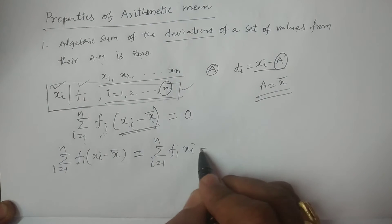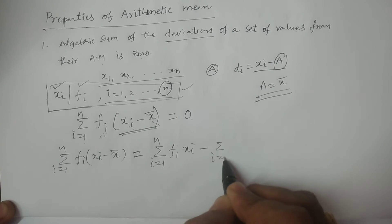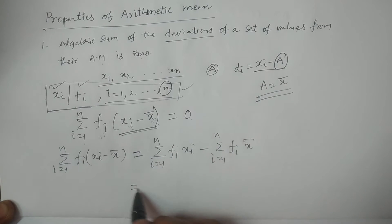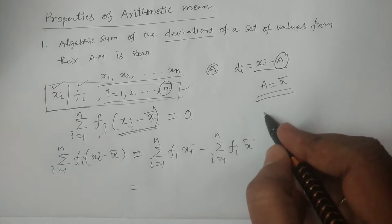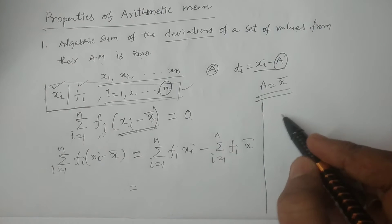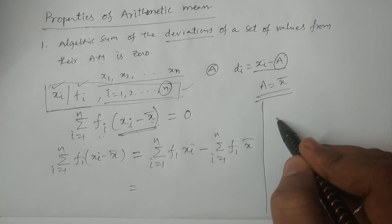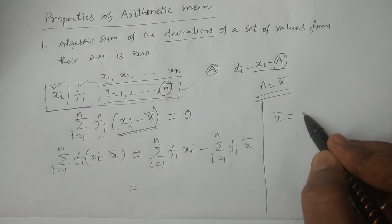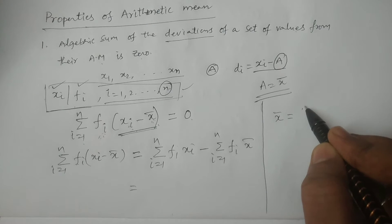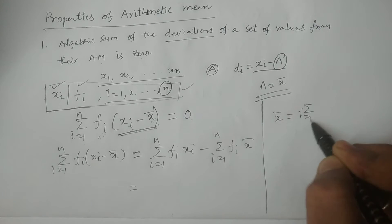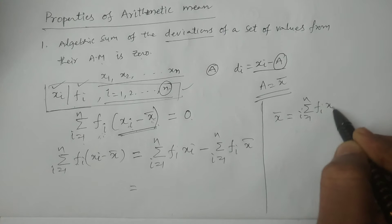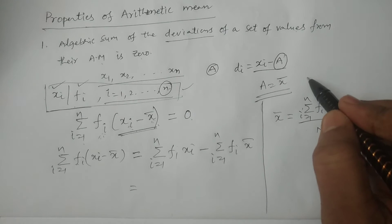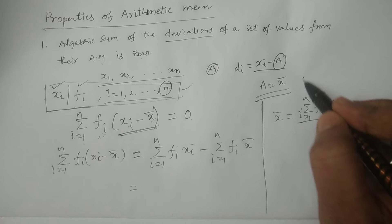We expand this as summation fi into xi, minus summation i equal to 1 to n, fi into x̄. If you recollect the formula of arithmetic mean, x̄ is equal to, for the grouped frequency distribution, summation i equal to 1 to n, fi xi divided by capital N. Capital N is equal to summation fi — the sum of the frequencies.